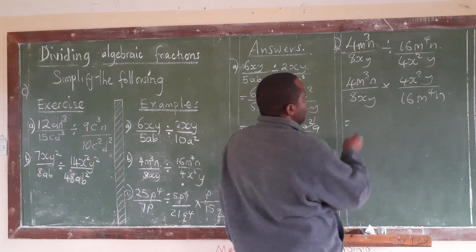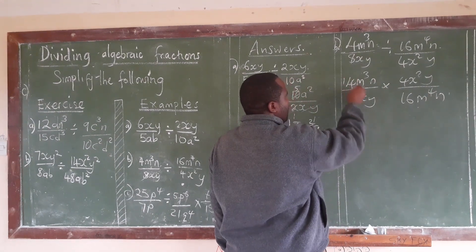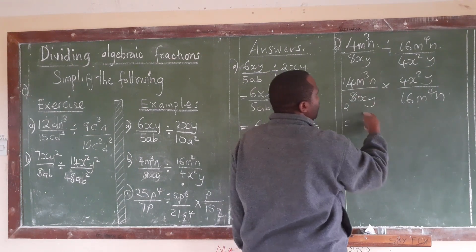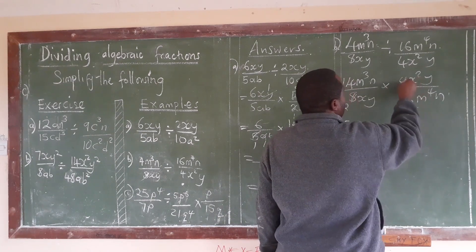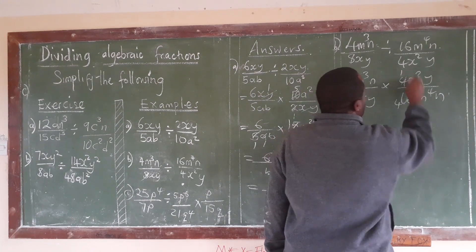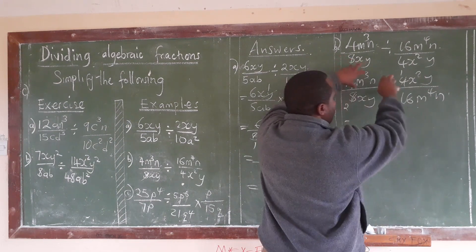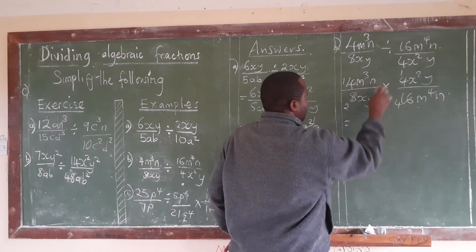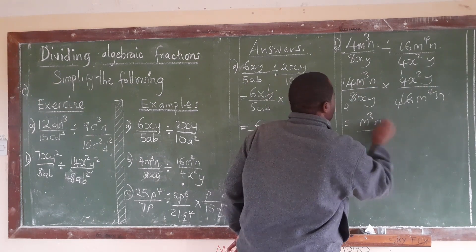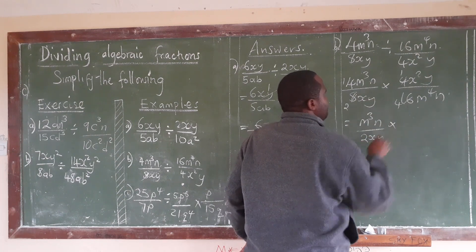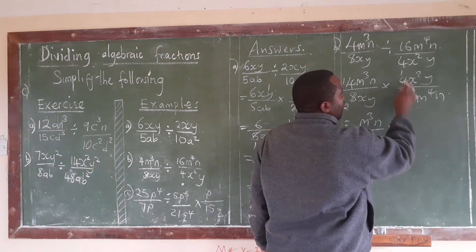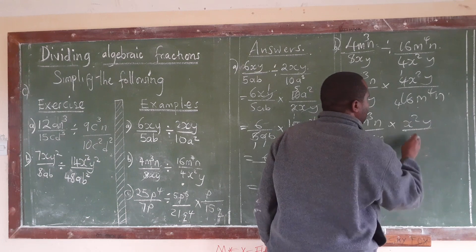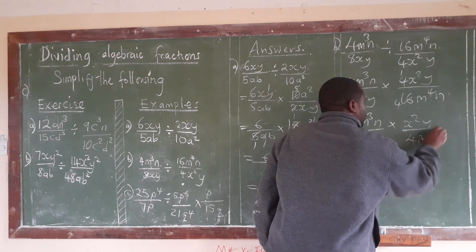Now we can take this fraction and look at what we can simplify. We take the diagonals. Here 4 into 4 is 1, and 4 into 16 is 4, giving us a 2 after further reduction. We can look at 4 into 4 is 1, and 4 into 16 becomes 4. Then we rewrite: M to the power 3, N over 2XY, times X squared, Y over 4M to the power 4, N.